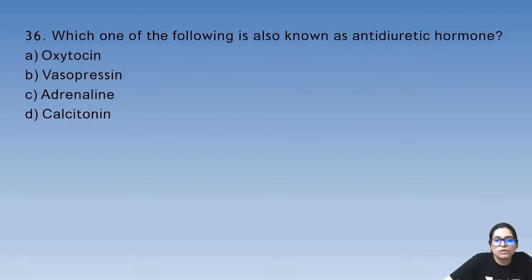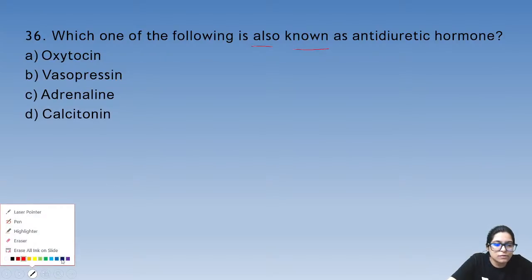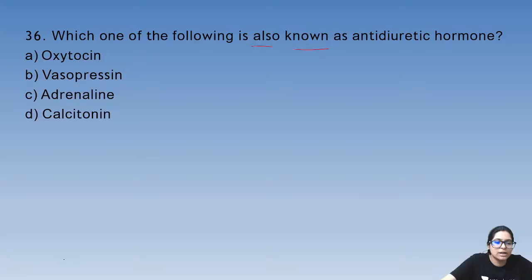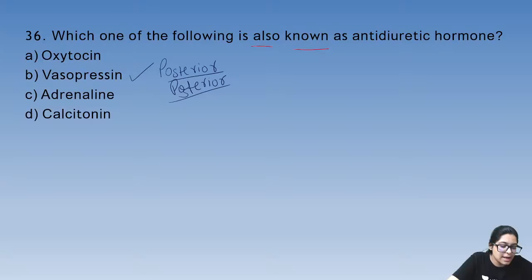Question 36: which is also known as anti-diuretic hormone? Vasopressin is the anti-diuretic hormone. It is released from the posterior pituitary but is produced in the hypothalamus. It prevents water loss.